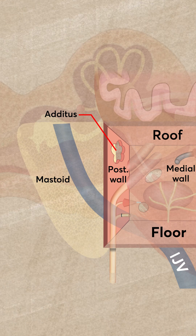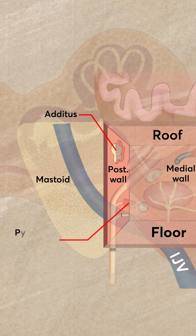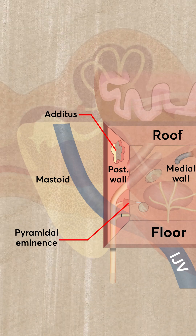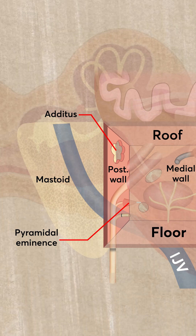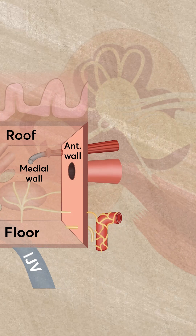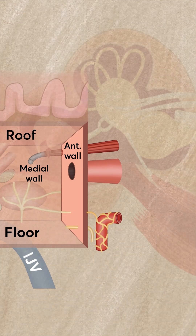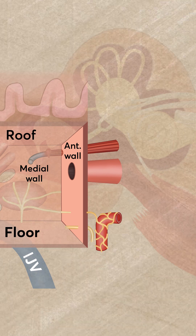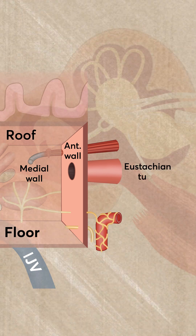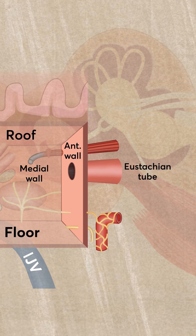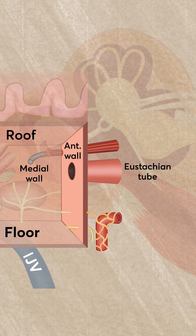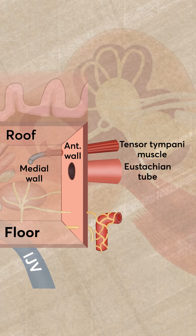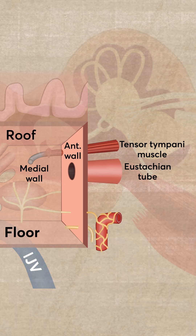The posterior wall also contains a projection — that projection is called the pyramidal eminence, found on the posterior wall. Then we have the anterior wall. The anterior wall of the middle ear has three important structures: it has got the Eustachian tube, which communicates with the middle ear and the nasopharynx. Above the Eustachian tube you have got the tendon for the tensor tympani muscle.